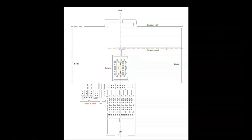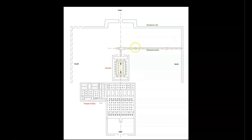Here you can see a diagram of the Osirion — an underground structure with its above-ground enclosure wall here, the entrance tunnel here, leading down into the main structure here, and the above-ground temple of Seti I located here.